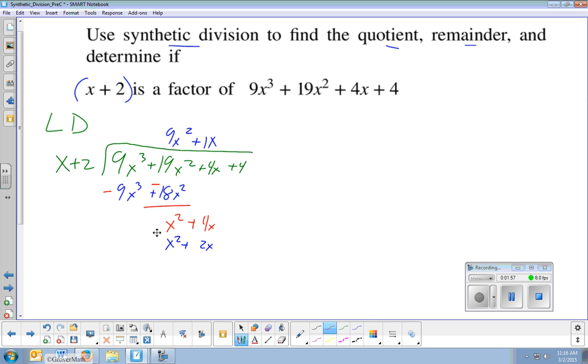Change those signs over and we're left with a remainder of 2x. And then bring down the plus 4, 2x divided by x is 2. Distributes to 2x plus 4 and by changing my signs, I do have a remainder of 0. So the quotient is 9x squared plus x plus 2. The remainder is 0 and determine if it is a factor. The answer is yes because we have a remainder of 0. Okay, that's long division.